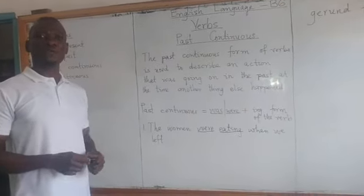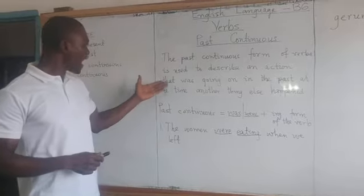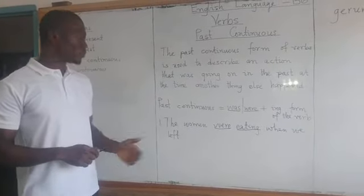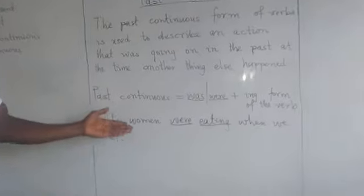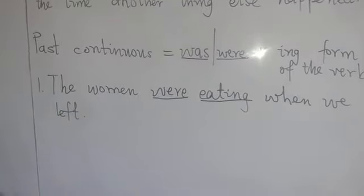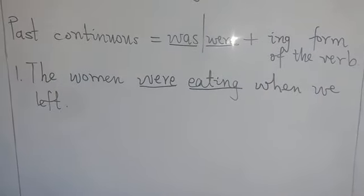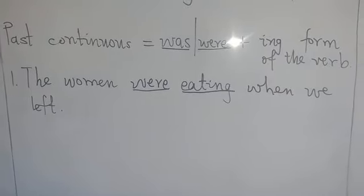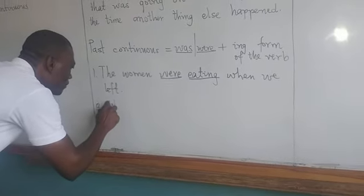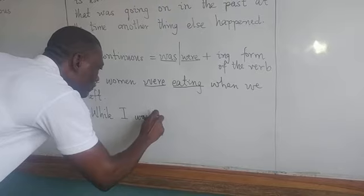The main verb in the sentence is 'eat,' and in the ing form we have 'eating.' When we arrived, the women were eating. So from the general meaning of past continuous forms of verbs, they are used to describe an action that was going on in the past. The women were eating — the eating was done in the past — and at the same time, we arrived. The women were eating when we arrived. I hope that is clear.